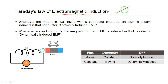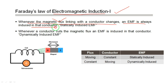We will discuss Faraday's Law 1 and Law 2 — what is in each law. This is very helpful to learn the operation of important machines. The first law states: whenever the magnetic flux linking with a conductor changes, an EMF is induced in that conductor. Alternatively, whenever a conductor cuts the magnetic flux, an EMF is induced in that conductor.